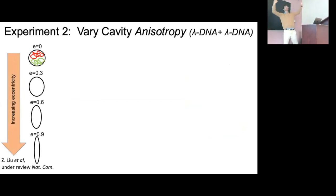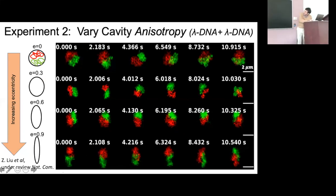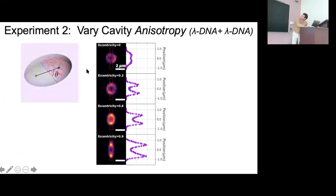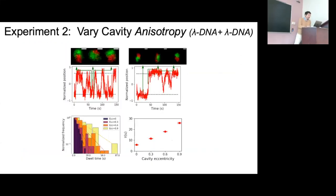We expanded the study by varying the anisotropy of the cavity — making circles that grow increasingly elliptical. In a circle, you see simple Brownian motion as before. As you make them more anisotropic, the molecules segregate: red occupies one side, but they can flip polarity. We get a polarization of the DNA. We quantify this by looking at the vector position between the centers of mass of the two coils — you get a donut in a circle, and a lip showing symmetry breaking in the elongated cavity.